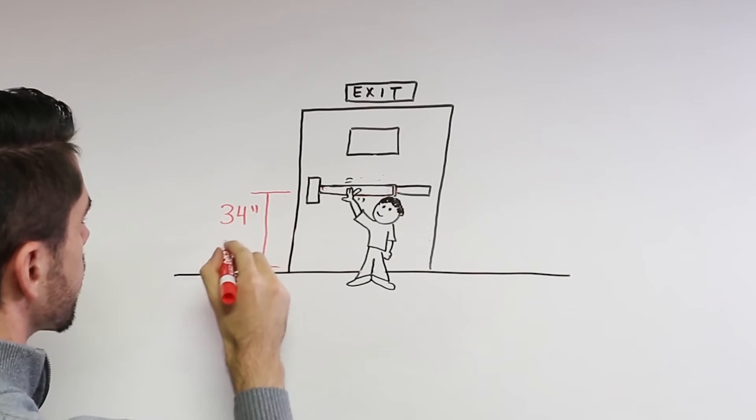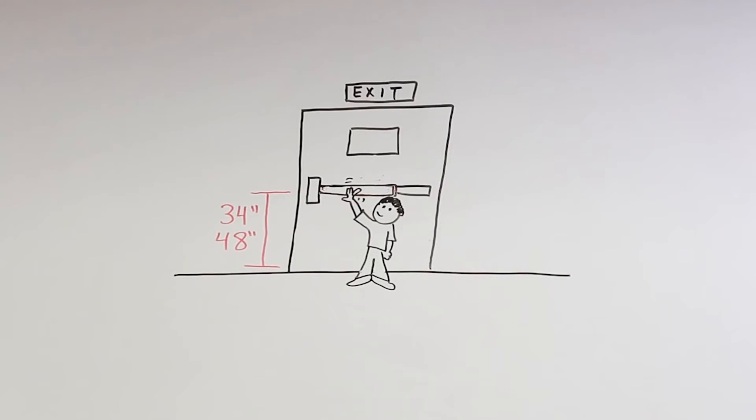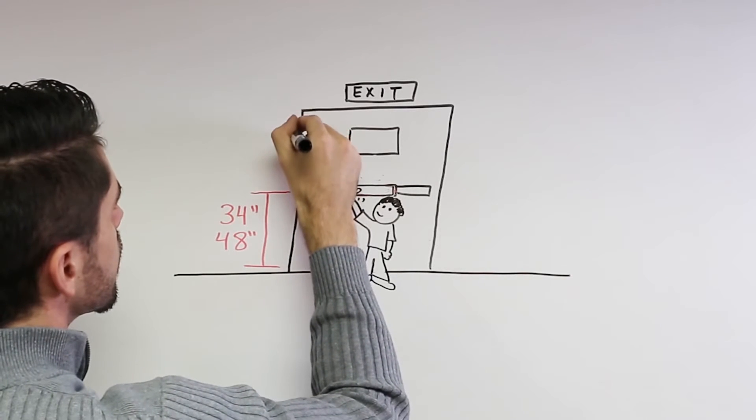Exit hardware must be mounted between 34 and 48 inches above the floor. Again, in an emergency, we don't want anyone to have to search for the device.